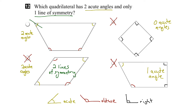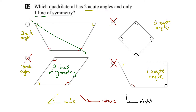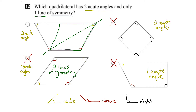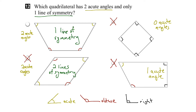Let's try the diagonals. If I go from here to here and try to flip this over that line, I'd end up with something that doesn't match up — not a line of symmetry. And trying the last diagonal option, flipping this shape again would also not produce a match — not a line of symmetry. So there is only one line of symmetry, and that's the vertical line. This quadrilateral has two acute angles and one line of symmetry, which matches our criteria. Therefore, it's the right answer.